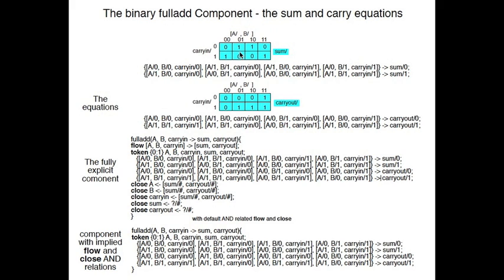We define the full add component with truth tables for the full add — the table for the sum and the table for the carry out. These are the equations mapped directly off the table. We define the component: full add takes A, B, and carry in, flowing to sum and carry out. We have a flow statement specifying that A, B, and carry in are AND-related and sum and carry out are AND-related, along with closure equations. The version using the default doesn't need explicit flow or close statements because AND-relation is implied when they're absent.